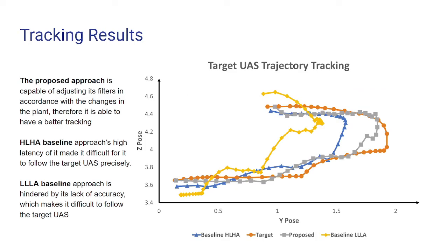Here you can see the results of the proposed approach compared with baseline HLHA — high latency, high accuracy — and baseline LLLA — low latency, low accuracy. The target is equipped with a trajectory that changes its direction and velocity very quickly. You can see the way the target is moving with the orange line. The chasing UAS is equipped with three strategies: the proposed approach and the two baselines. The proposed approach is able to track the target very well compared to HLHA and LLLA. The baseline HLHA is good at detecting the target, but because of its high latency, the control is not able to provide the appropriate strategy at the appropriate time, whereas the low-latency, low-accuracy network is very fast but its confident detection is not good enough, causing deviation.